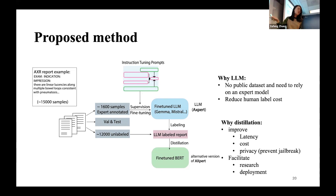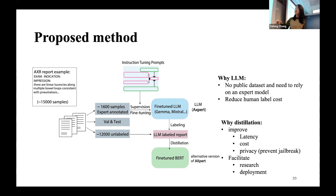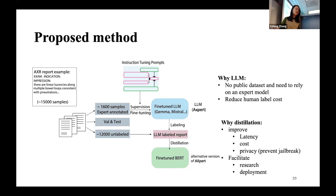We use LLMs because there is no public dataset and LLMs can serve as expert models while reducing human labor costs. We do distillation to improve model latency — LLM inference is much slower — and to reduce computational resource costs. Also, BERT only stores weights, whereas LLMs store token relationships, which can potentially reveal patient information, raising additional privacy concerns.